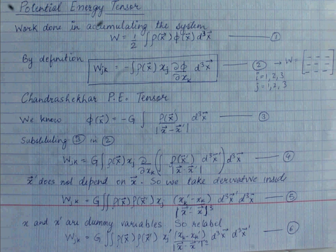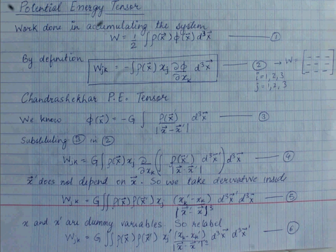The potential energy tensor for any system is very important to study because it gives you the work done in accumulating the system. It's important in classical mechanics and many fields of physics — solid state physics, gravitational physics, quantum field theory. The work done in assembling the system is given by W = (1/2) ∫ ρ Φ dV, which is equation one. W here is a scalar — it's the potential energy.